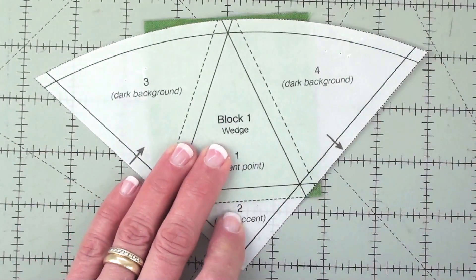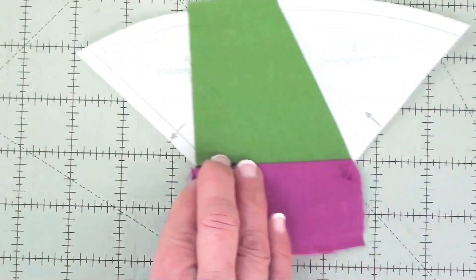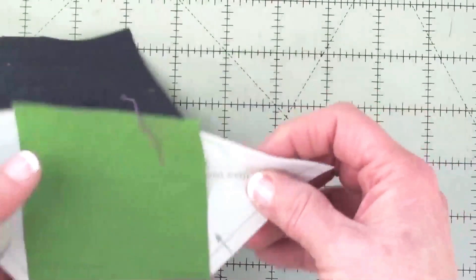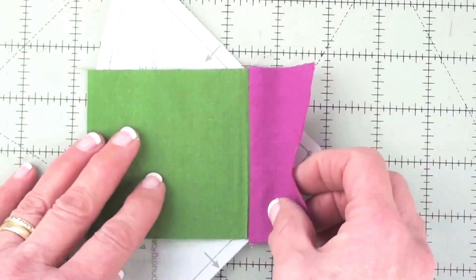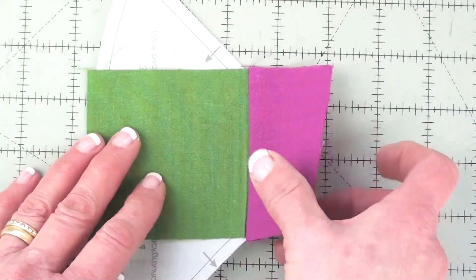Now I've already done that so let me magically pull this over. Whoops, that's the wrong one. All right, so I've got one and two sewn to the paper and pressed open.